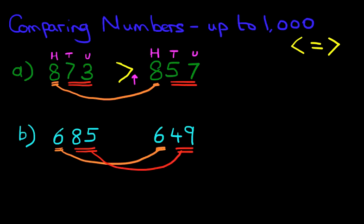Therefore, we know that the arrow points this way. 685 is greater than 649. And it really is that simple.